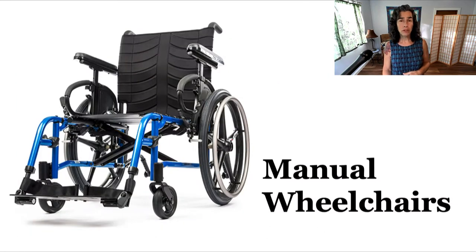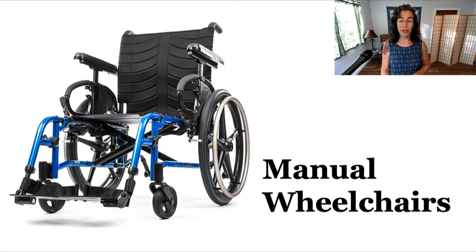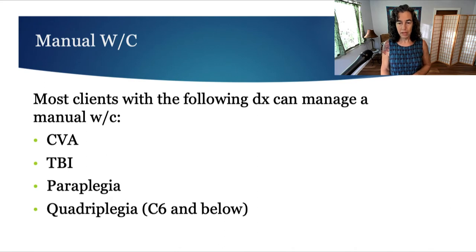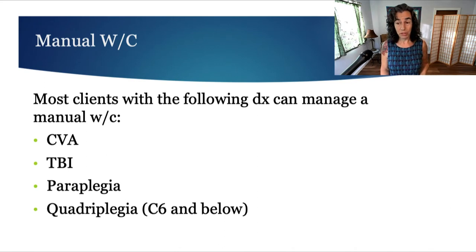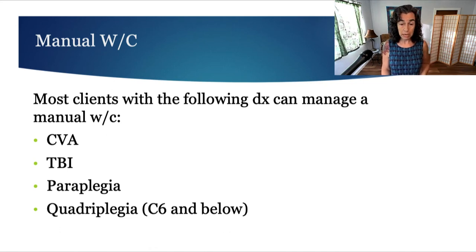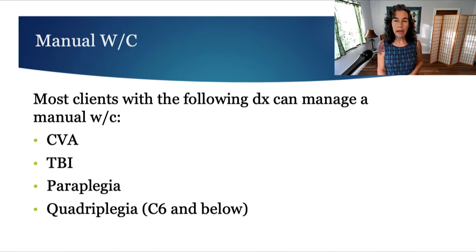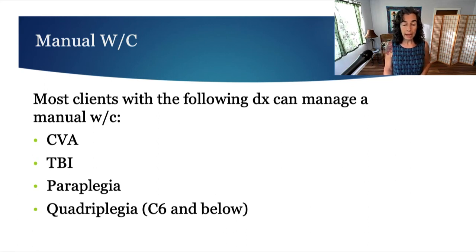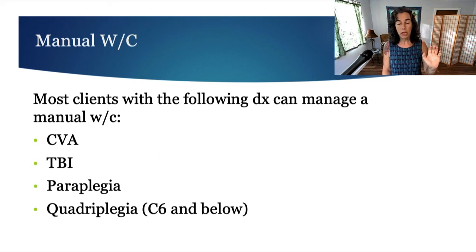We're going to first talk about manual wheelchairs and then switch over to power chairs. Most clients with these diagnoses can manage a manual wheelchair: stroke, traumatic brain injury, paraplegia, or quadriplegia C6 and below. Individuals who have a C6 injury have shoulder function, elbow flexion, and wrist extension, so they can actually physically power a wheelchair.